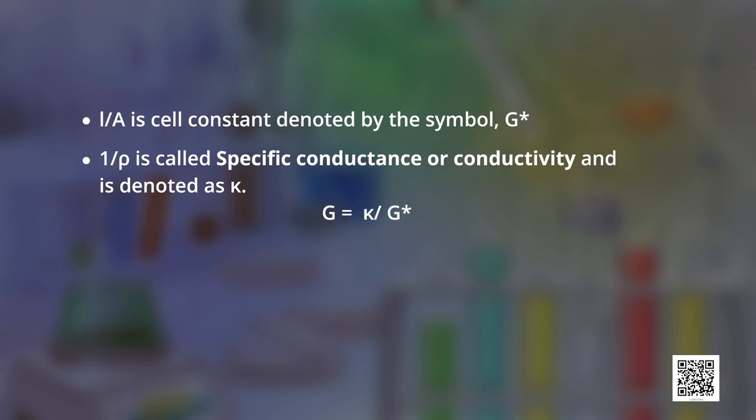G = κ / G*, or κ = G × G*. Hence, conductivity can be defined as the property to conduct electricity in a cell with two electrodes of unit cross-sectional area separated by unit length. The units are ohm⁻¹ cm⁻¹, and since ohm⁻¹ can be written as Siemens, the units can also be written as S cm⁻¹.